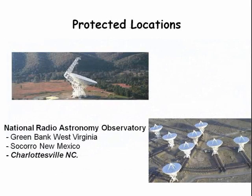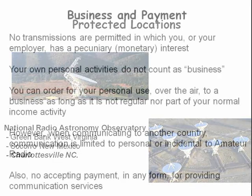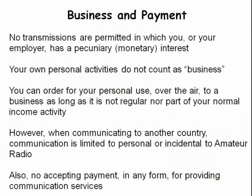There are also protected locations where you cannot transmit, such as the national radio astronomy observation site listed here. No transmissions are permitted in which you or your employer has a pecuniary — that is, a monetary — interest.